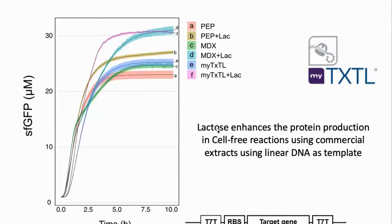Reading the literature, we discovered that the company that makes myTXTL produces cell extracts with the core based on maltodextrin. When I added lactose to their system, I saw better yields. When I also added lactose to my own maltodextrin system, they reached basically the same level. So basically, the company could use lactose now to improve their own commercial system.